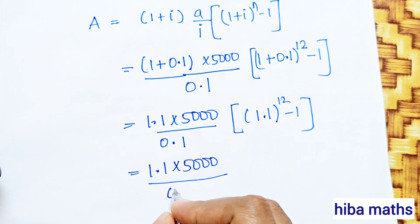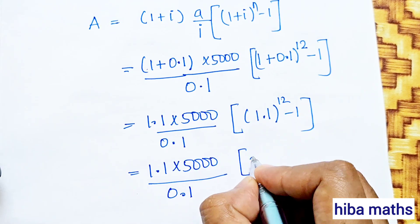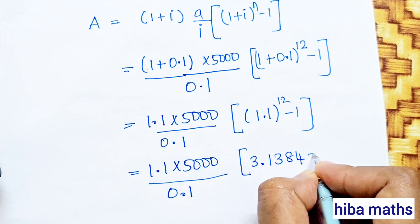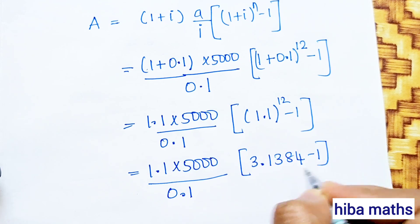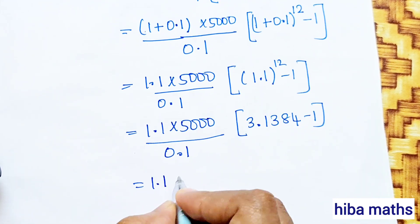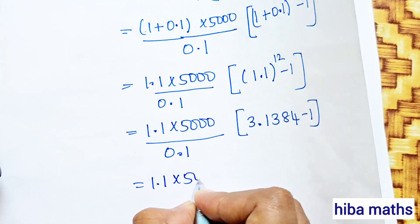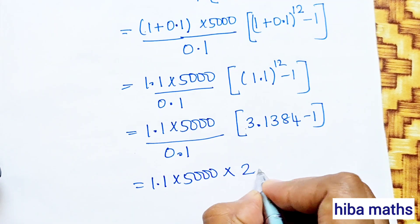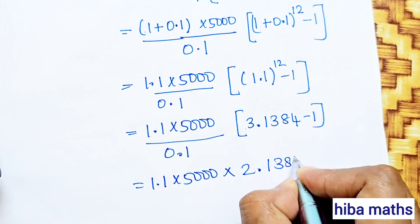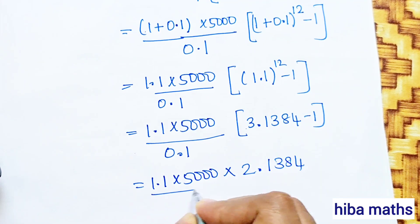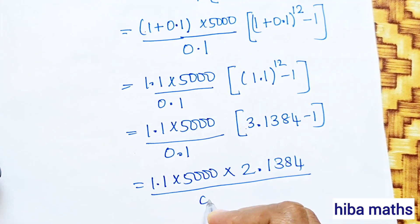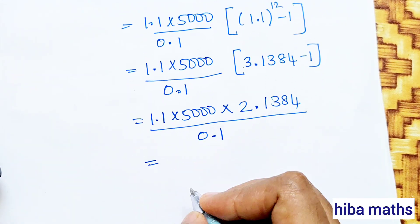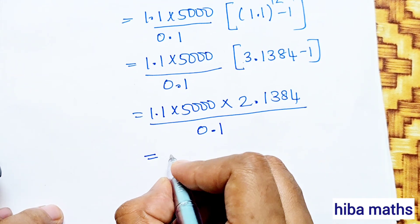Continuing the calculation: 1.1 into 5,000 divided by 0.1 into 3.1384 minus 1, which is 1.1 into 5,000 into 2.1384 divided by 0.1.